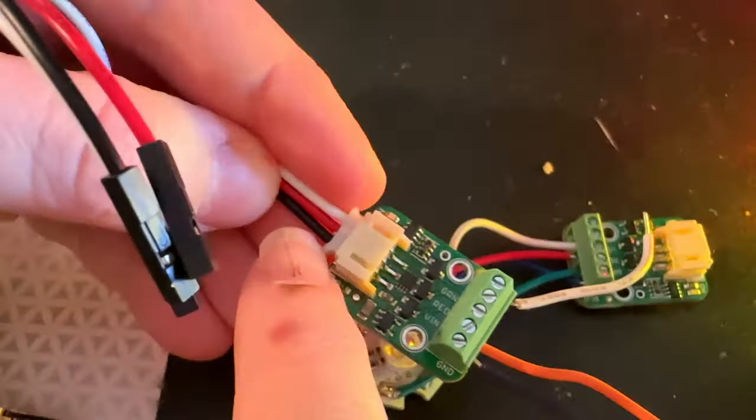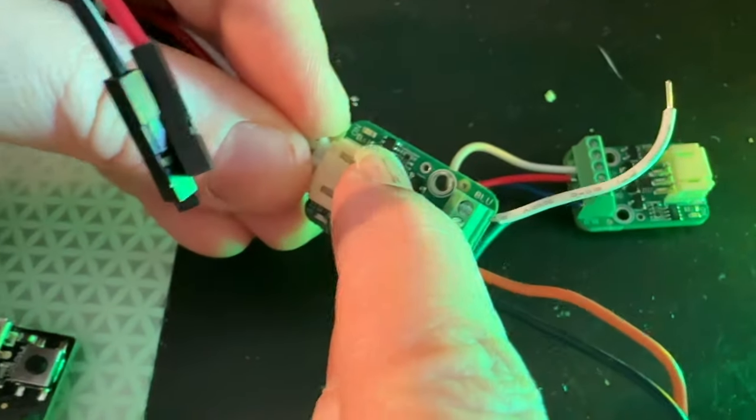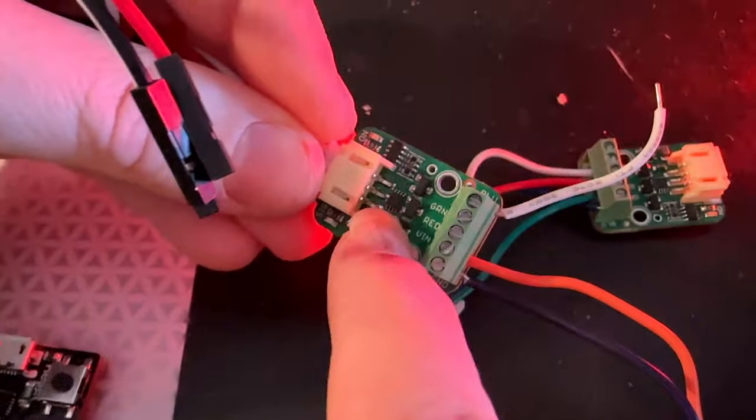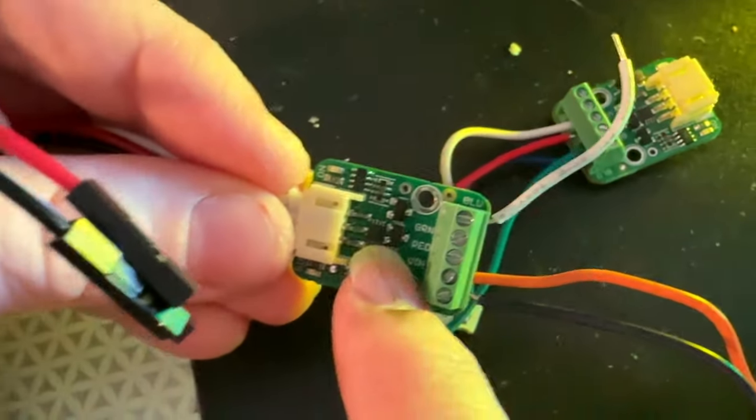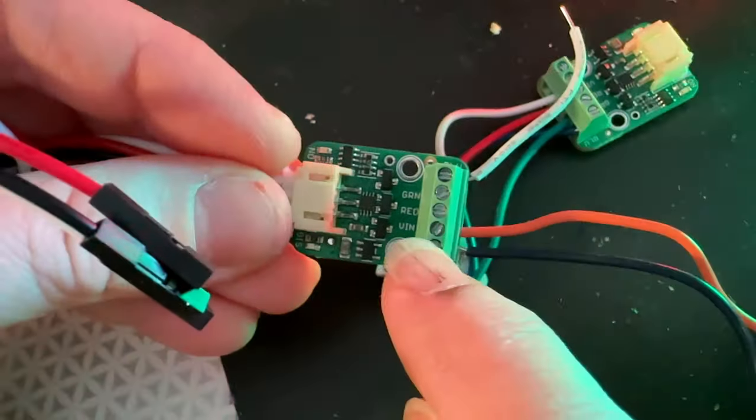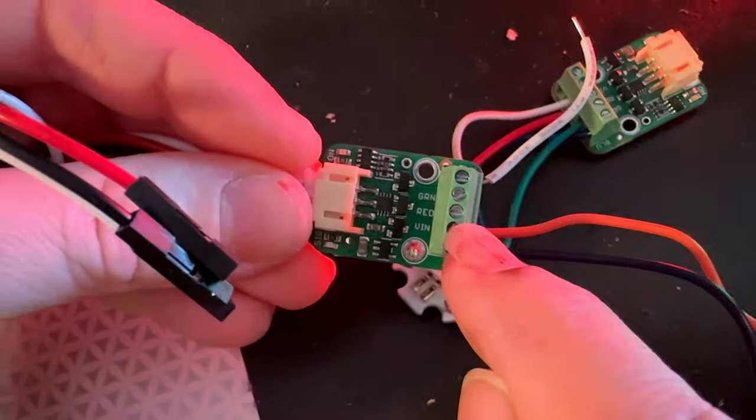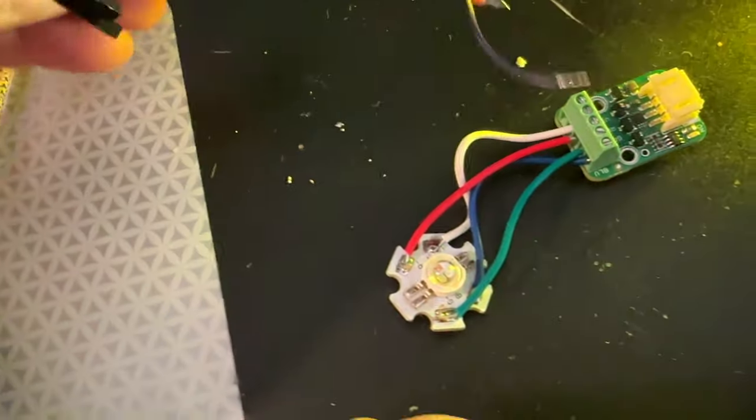NeoPixel power, ground, and data comes in here. This is a WS2811 chip, and then there's an inverter, and then it drives three powerful transistors, so it can drive 5 to 12 volt LEDs, common anode, up to 3 amps per channel.